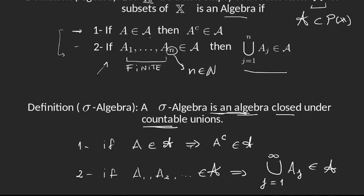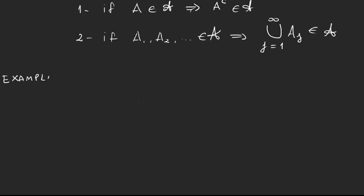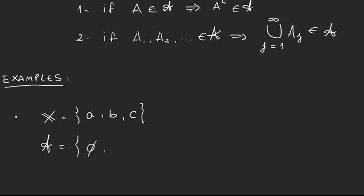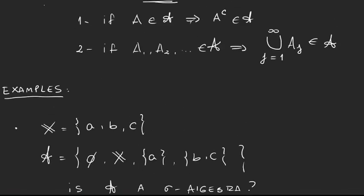Now let's look at some examples, because when we look at these things in an abstract way it's pretty hard to imagine the definitions. Let's say we have the set X = {a, b, c} — a, b, and c can be anything we want — and we define this collection that has the empty set, the whole set X, the set containing only element a, and the set containing elements b and c. We ask ourselves: is this a sigma algebra? We have to check that the two properties are being satisfied.